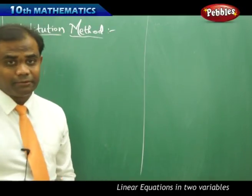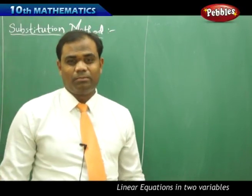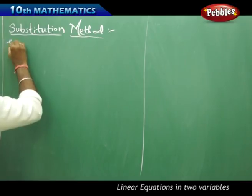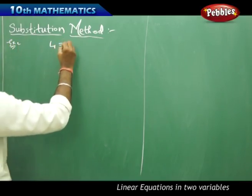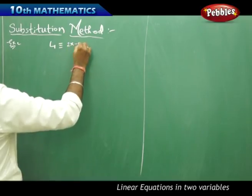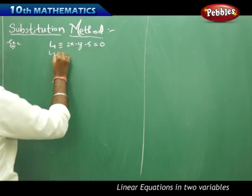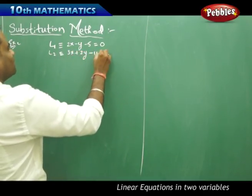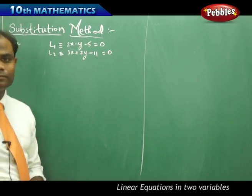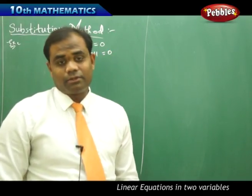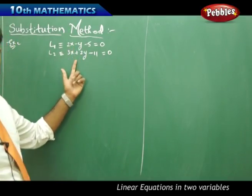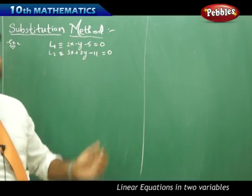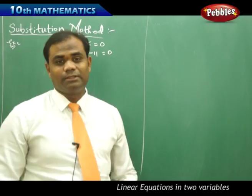Now let's see the substitution method in brief by taking an example problem. I take two lines: line L1 which is 2x minus y minus 5 equal to 0, and line L2 which is 3x plus 2y minus 11 equal to 0. I want to find the intersection — the values of x and y — using the substitution method.